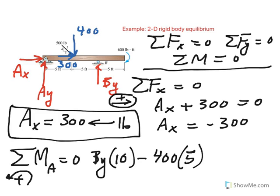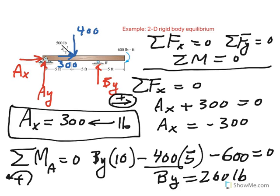And then finally, don't forget the 600 pound foot, which could be added or subtracted. In this case, subtracted because it's clockwise. Here we solve for By, and By comes out to be 260 pound. And because we got a positive, that implies the direction is okay, and By in fact is acting up.